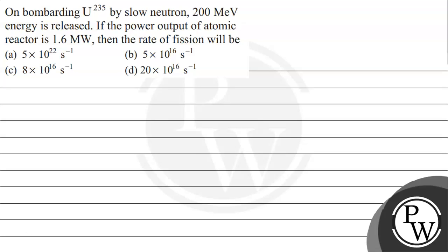Hello Bacho, let's read the question. The question says on bombarding uranium-235 by slow neutron, 200 mega electron volt energy is released.